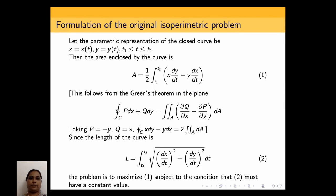Let us formulate the original isoperimetric problem mathematically. Let the parametric representation of the closed curve be x equal to x(t), y equal to y(t), where t varies between t1 to t2 — that is, the closed curve is traversed counterclockwise as t increases from t1 to t2. Then the area enclosed by the curve is given by A equal to half of integral t1 to t2 of (x dy/dt minus y dx/dt) dt.